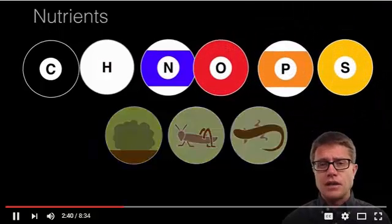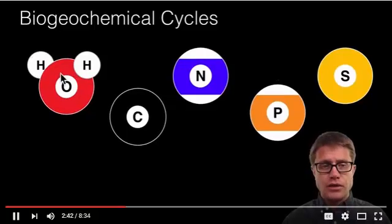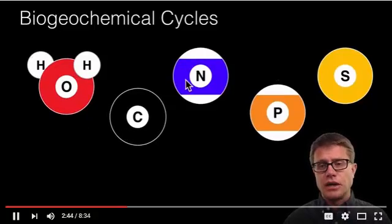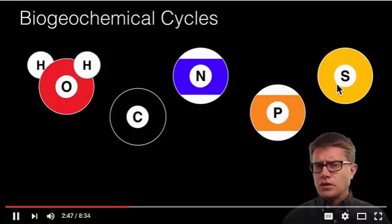If we organize that into the five cycles we have got the water cycle, carbon cycle, nitrogen cycle, phosphorus cycle, and sulfur cycle. So why do we need all of this matter?